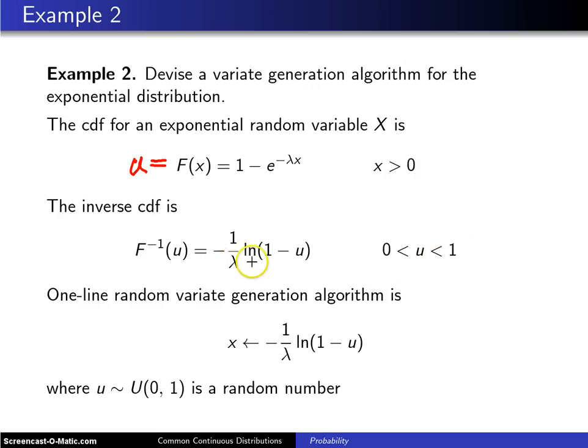Once you have that inverse cumulative distribution function in closed form, you can generate a random variate in one line by simply assigning x to the inverse cumulative distribution function where u is a random number, which is the same as saying u is uniformly distributed between 0 and 1.